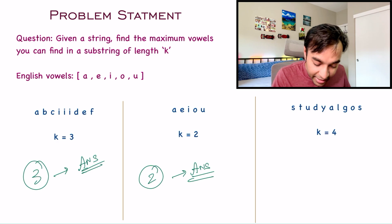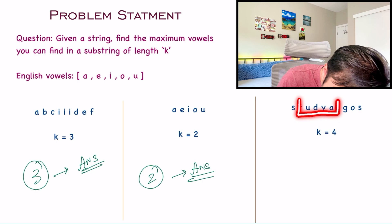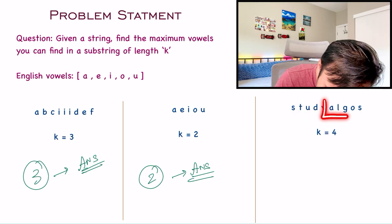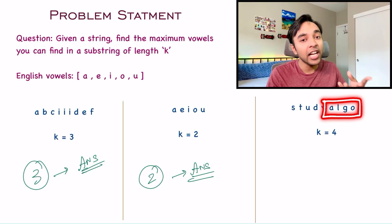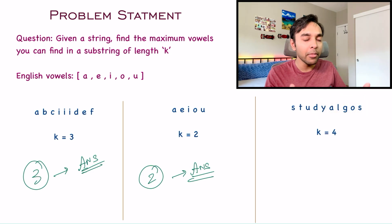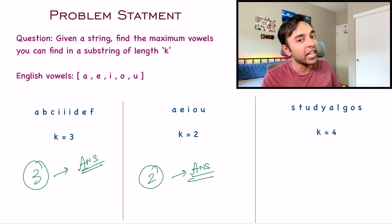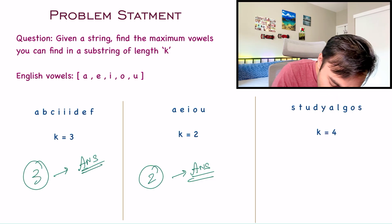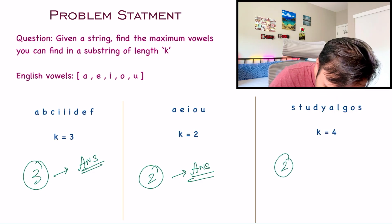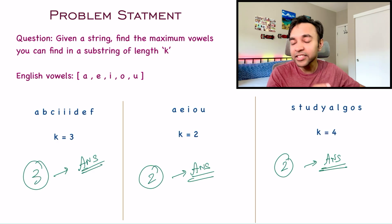Similarly, if you look at the third test case, the value of k is 4. There are two such strings — UDYA and ALGO. Both of them have length 4 and both of them have 2 vowels. You can choose either of them because you don't have to tell me which substring has the maximum number of vowels, just how many vowels you found. So for the third test case, 2 will be your answer. If this makes the problem statement clear, feel free to stop the video and try the problem on your own. Otherwise, let us dive into the solution.